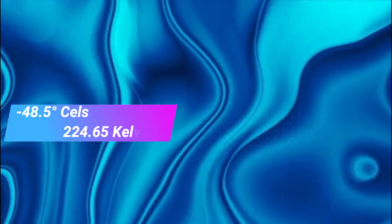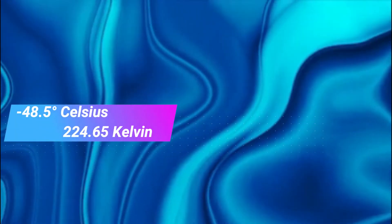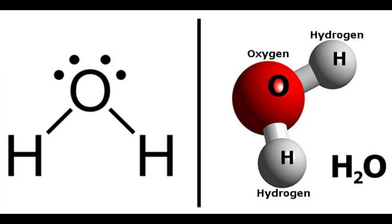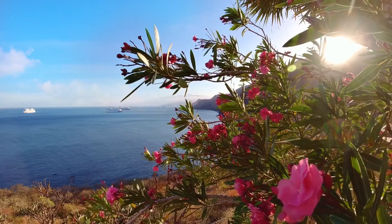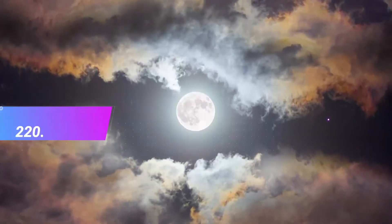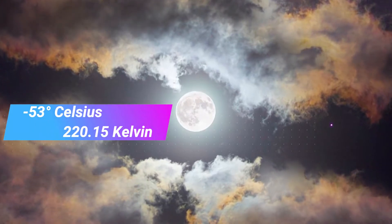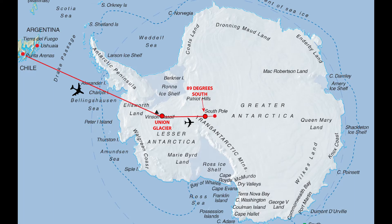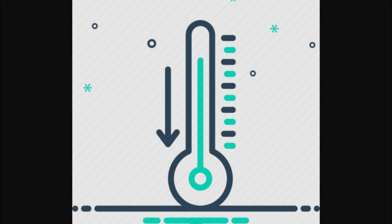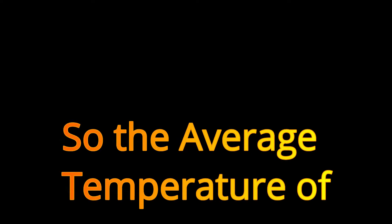Water can still remain liquid through supercooling until minus 48.5 degrees Celsius or 224.65 Kelvin, after which the water made up of hydrogen and oxygen molecules will freeze permanently. The average temperature of a day on the Moon is minus 53 degrees Celsius or 220.15 Kelvin — you can think of the Apollo missions here.